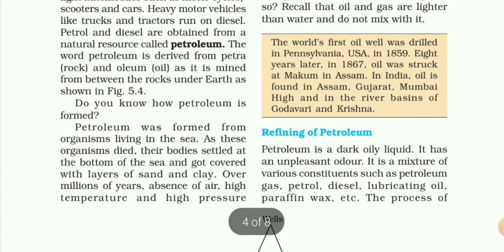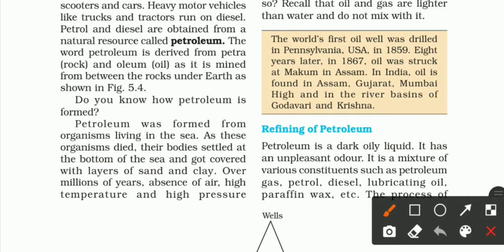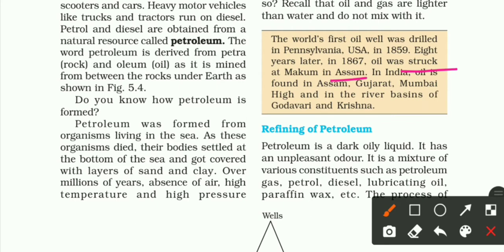World ki first oil well drill ki gayi thi USA mein 1859 mein, Pennsylvania mein. 8 years later, 1867 mein, oil was struck at Makum in Assam. India ke andar bhi yeh paaya gaya. And in India, oil is found in Assam, Gujarat, Mumbai High, and in the river basins of Godavari and Krishna.